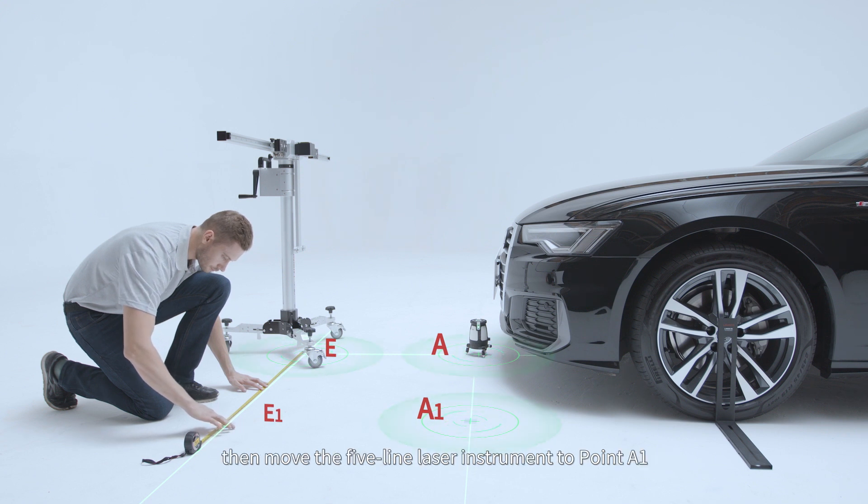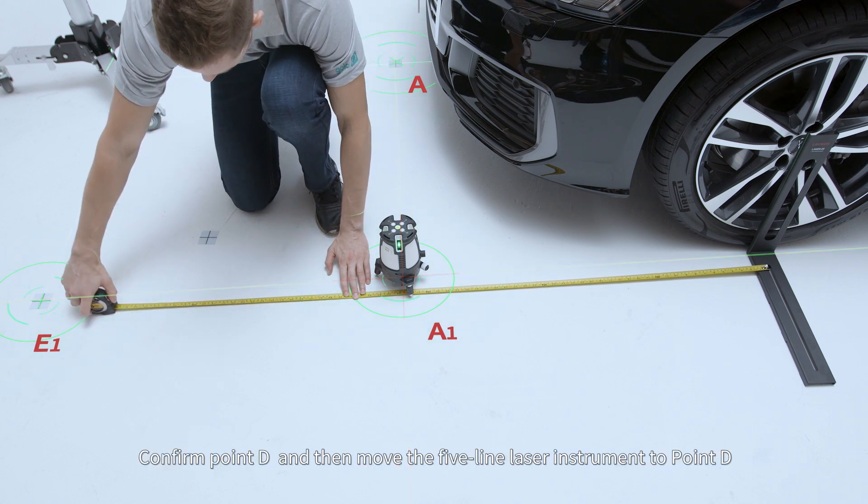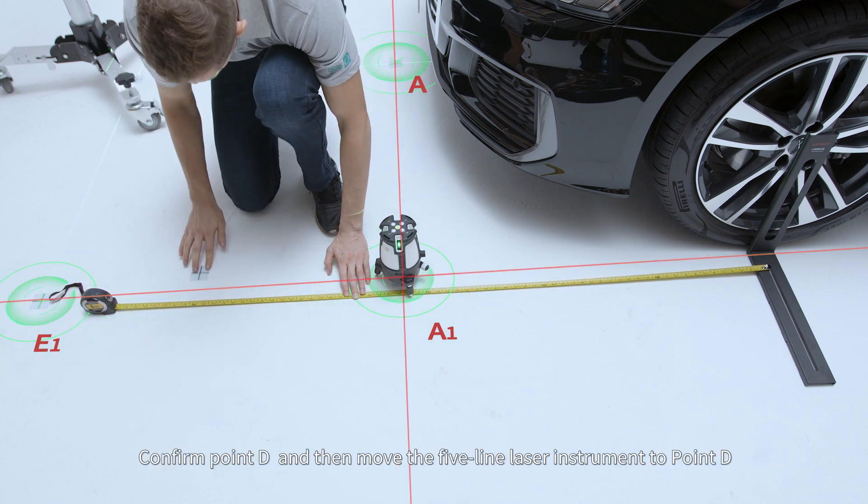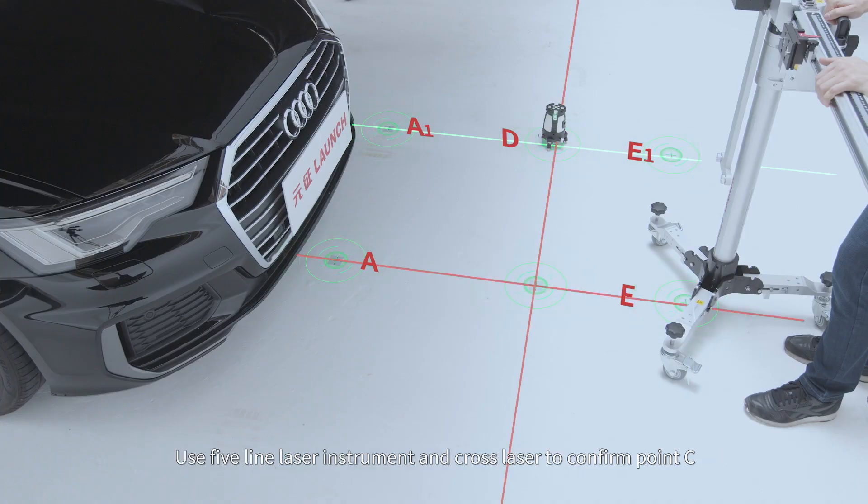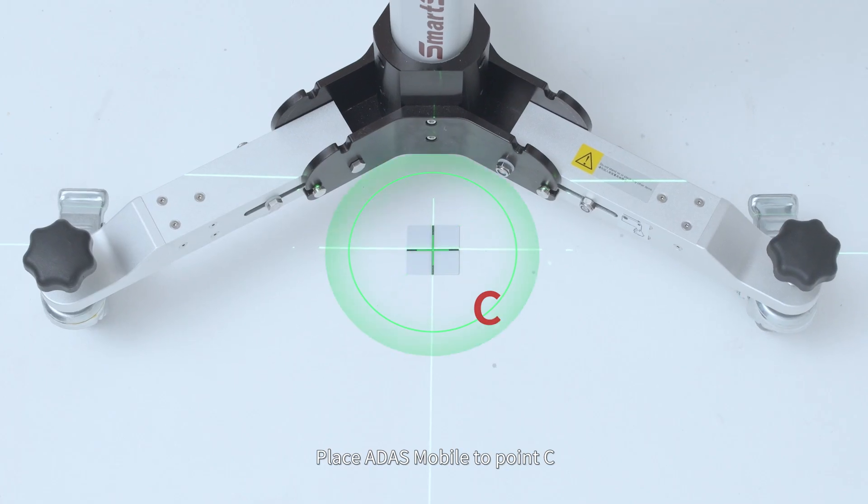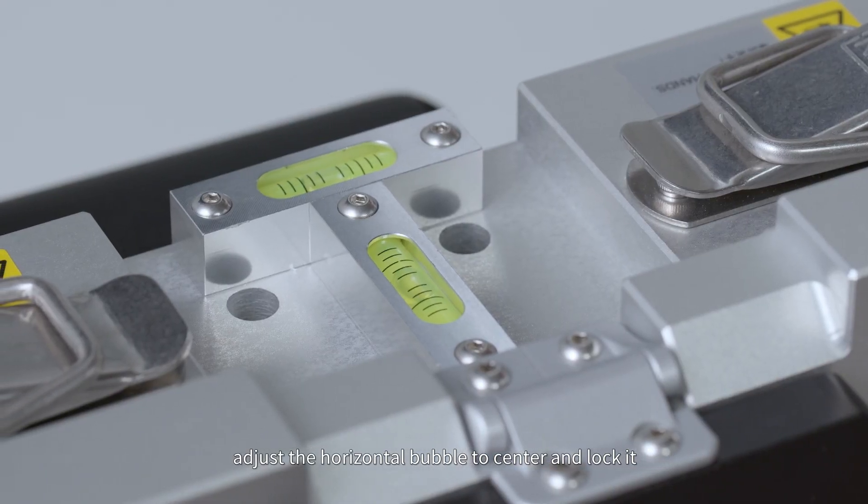Then move the 5-Line Laser Instrument to point A1. Confirm point D. And then move the 5-Line Laser Instrument to point D. Use 5-Line Laser instrument and cross-laser to confirm point C. Place ADAS Mobile to point C. Adjust the horizontal bubble to center and lock it.